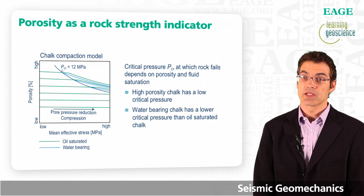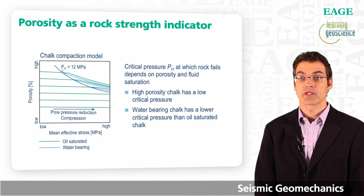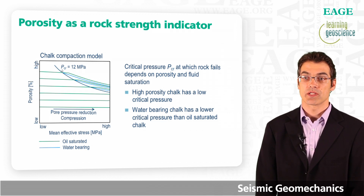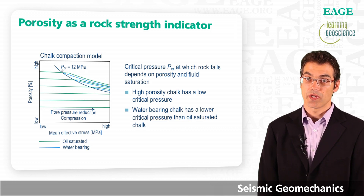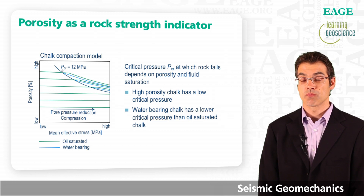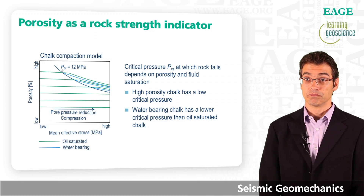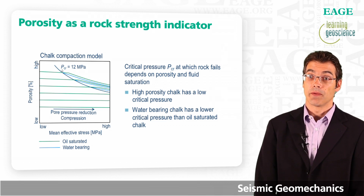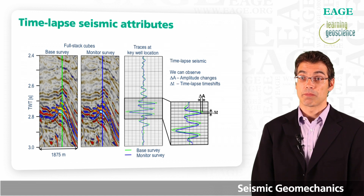A further decrease in pore pressure causes a rapid decrease in porosity — the rock compacts. High porosity chalk has a low critical pressure, so it will fail at a low mean effective stress. Water-bearing chalk also has a lower critical pressure at which it fails than oil-saturated chalk. Combining this information with the porosity model in a geomechanical model and forward modeling the seismic effects, we can see where the reservoir compacts, producing overburden time-lapse time shifts.